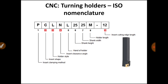These locations have different meanings. Location 1 is the insert clamping method — how the insert is clamped over the holder. Location 2 decides the shape of insert. Location 3 denotes the holder's style — how the holder is approaching during machining. Location 4 gives the insert clearance angle. Location 5 is the hand of the holder — left hand, right hand, or neutral. Location 6 denotes shank height, location 7 denotes shank width, location 8 denotes holder length, and location 9 denotes the cutting edge length of the insert.